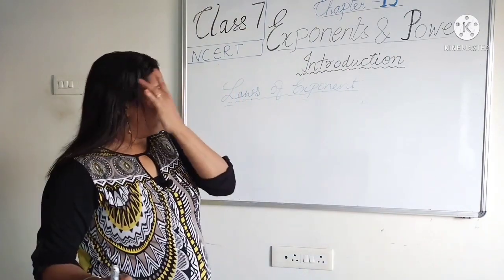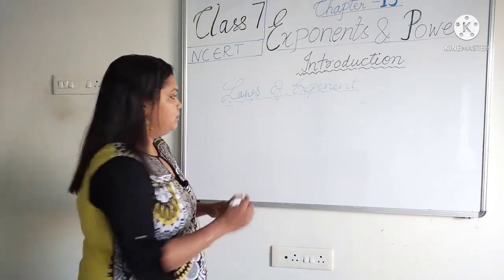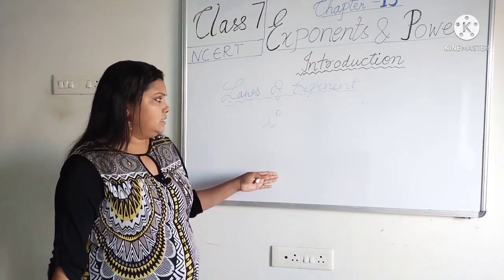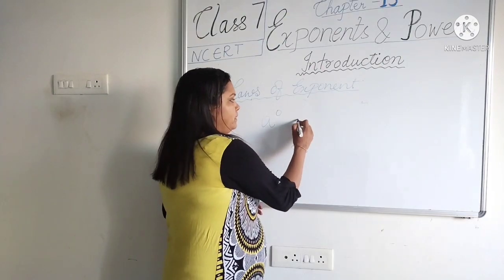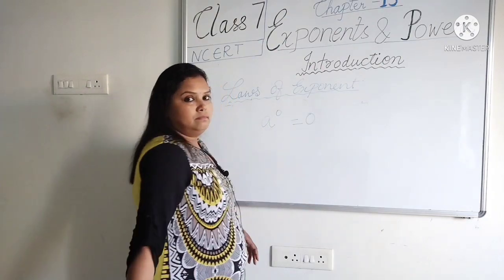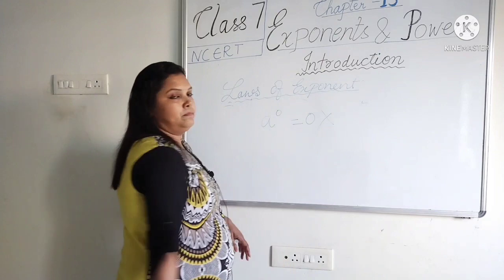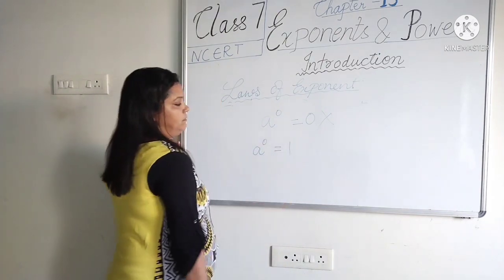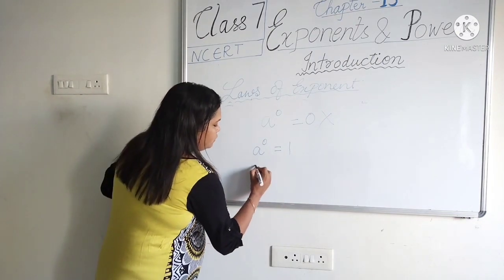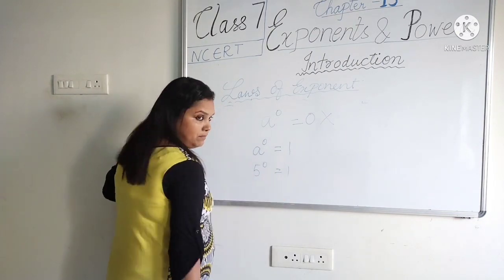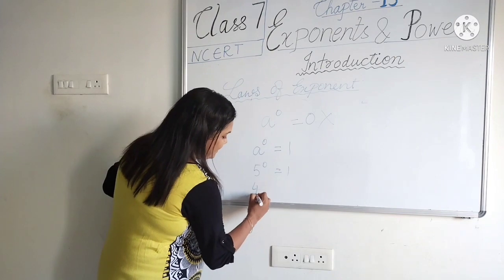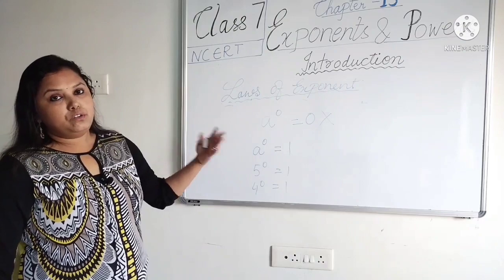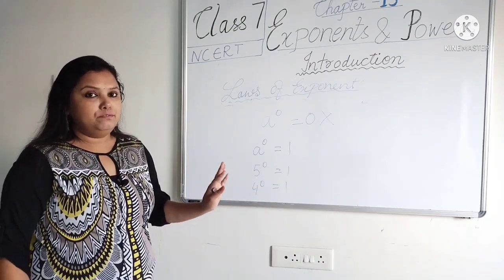Now, what if the power is 0? If I write a to the power 0, is the answer 0? No, it is not. Any number raised to the power 0 equals 1. For example, 5 raised to the power 0 is 1, and 4 raised to the power 0 is also 1. Any number raised to the power 0, the answer is always 1.